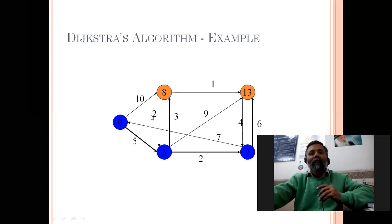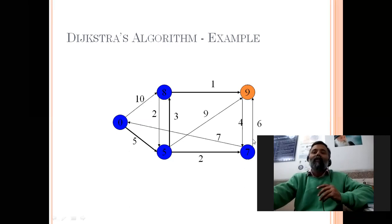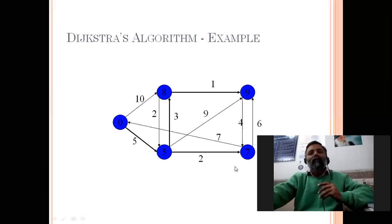Now we have two nodes in the priority queue: 8 and 13. The lowest is 8, so it is deleted. Its adjacent node is still in the queue: 8 + 1 = 9, which is less than 13, so 13 is updated to 9. Now only one node remains in the priority queue; it is deleted, and 9 + 4 = 13, which is already greater than 9, so no change. This is how we find the shortest path from any source node.